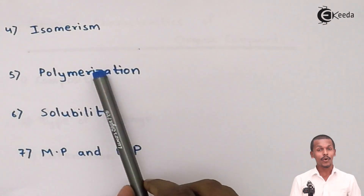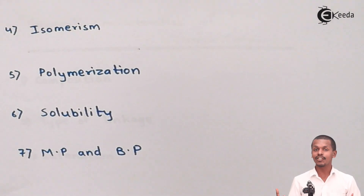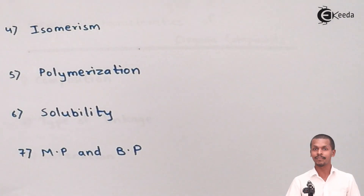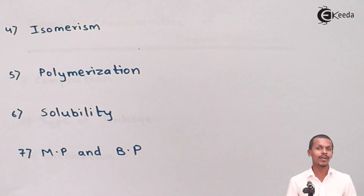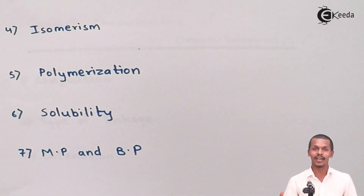Next is Polymerization. Polymerization is the conversion of small molecules called monomers into larger molecules called polymers, which have a larger molecular mass and size. This process is showcased by organic compounds. For example, Polyethene is a polymer of Ethene — Ethene is a very small molecule, but Polyethene is a very large molecule with a larger molecular mass.